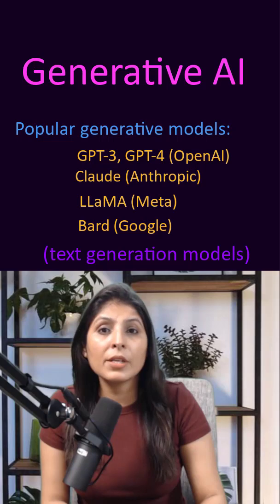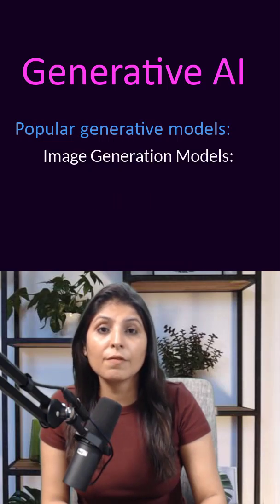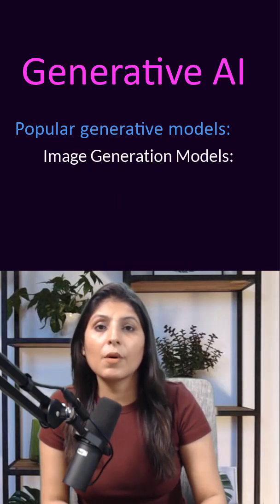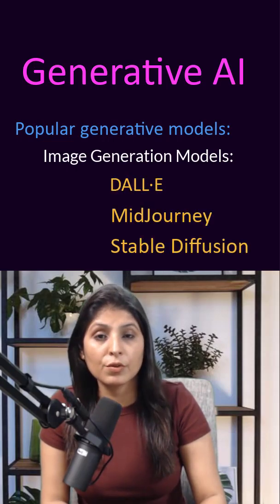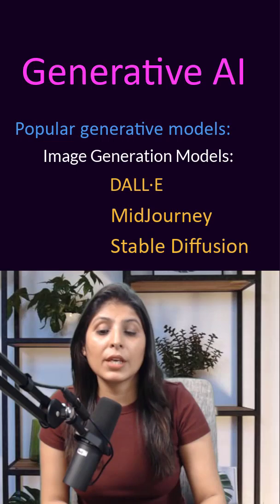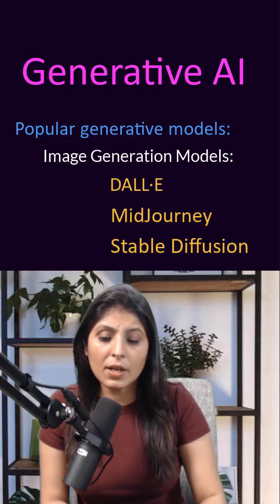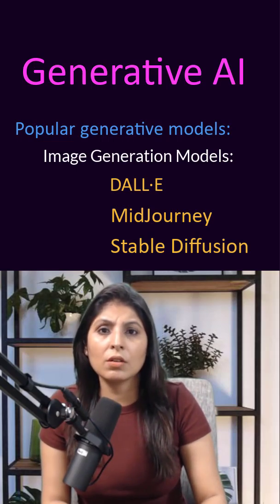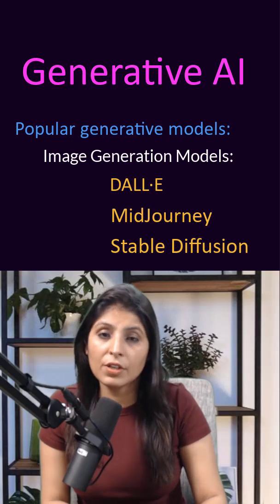If you want to generate images, you can use generative models for that. Some of the image generation models are DALL-E, Midjourney, or Stable Diffusion. These models create images from text descriptions. Similarly, there are generative models for creating audio and videos.